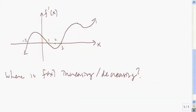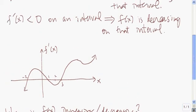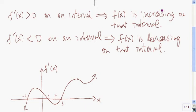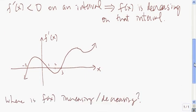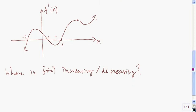Let's do an example. Here I've drawn the graph of some derivative — the derivative of some function f of x. I want to use the graph of the derivative to see where f of x is increasing and where it's decreasing. We know that if f prime of x is greater than zero on an interval, then the function is increasing on that interval. So to find where my function is increasing, I'm going to figure out where f prime of x is greater than zero — greater than zero means above the x-axis. So for all these values of x, f prime of x is greater than zero.